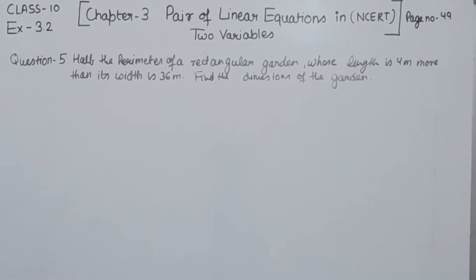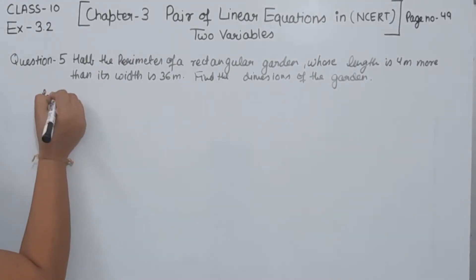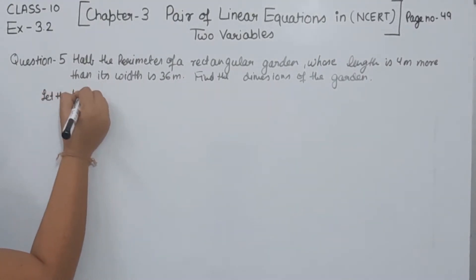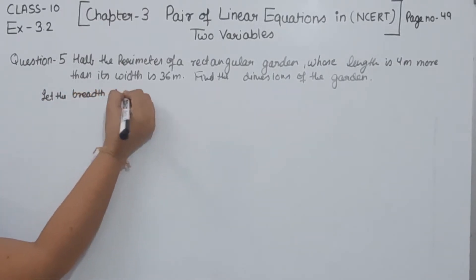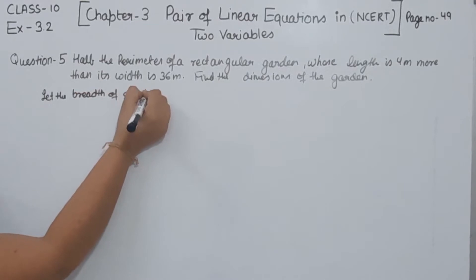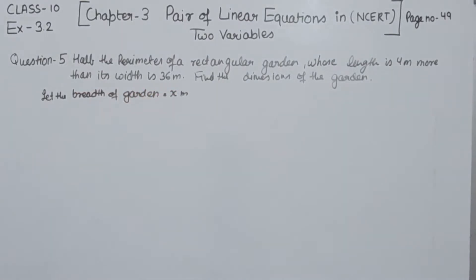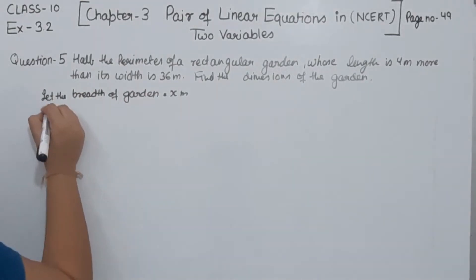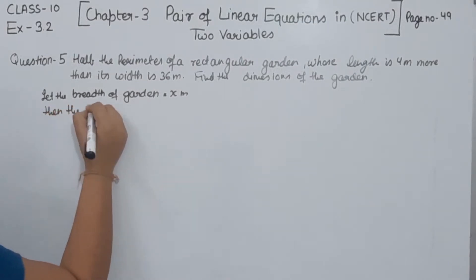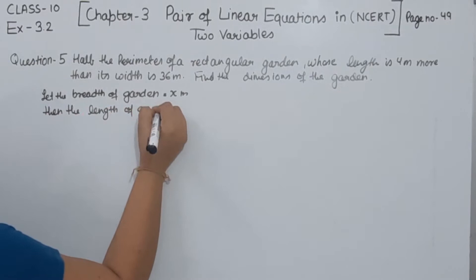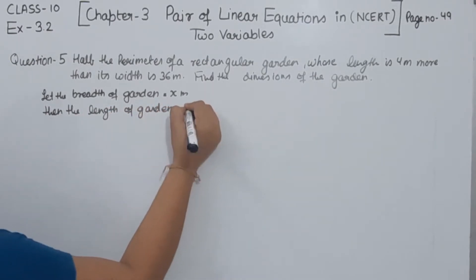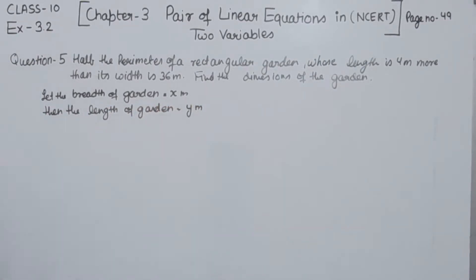First of all, we are going to let the breadth of the garden as equal to x meter. So if we have let the breadth of the garden as equal to x meter, then the length we are having as equal to y meter.